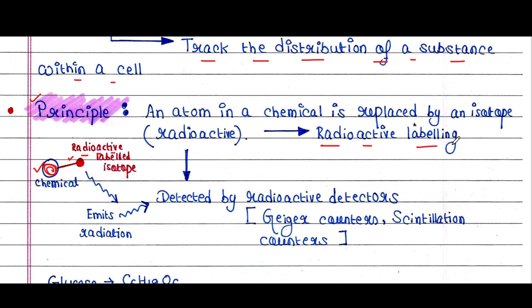Now we can trace the presence of this radioactive labeled isotope. How? Because this radioactive isotope emits radiation which a normal atom cannot.